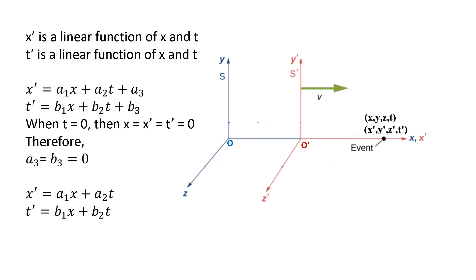Therefore X prime is of the form A1·X + A2·T + A3, and T prime is of the form B1·X + B2·T + B3. When t equals 0, then X, X prime, and T prime are also 0. Therefore the constant terms A3 and B3 are zero, and we get X prime equals A1·X + A2·T and T prime equals B1·X + B2·T.